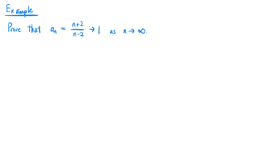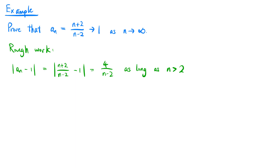Let's prove another example which is a bit more tricky. We want to prove that the sequence an, which equals (n plus 2) over (n minus 2), converges to 1 as n tends to infinity. As before, we simplify the absolute value of an minus 1. It equals the absolute value of (n plus 2) over (n minus 2) minus 1, which equals 4 over (n minus 2), where we have removed the absolute sign assuming that n is greater than 2.